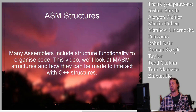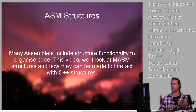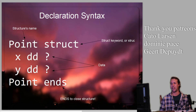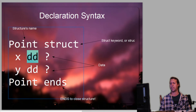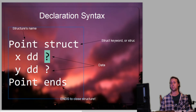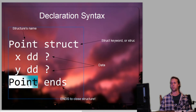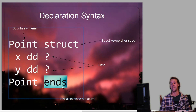Many assemblers include structures functionality, or the functionality to combine together smaller data types into single larger data types, just for convenience. This is how you declare a structure in assembly. We start out with the structure name, such as 'point', and then we've got the struct keyword — this can also be 'struc' without the T on the end. We define the elements of the structure; I've got a point with two elements, X and Y, and they're both DD or define a D-word, same as an int in C++. The question mark just means don't initialize it to anything. At the end of the structure, we close it off by specifying the structure name again, then 'ends' for end structure.